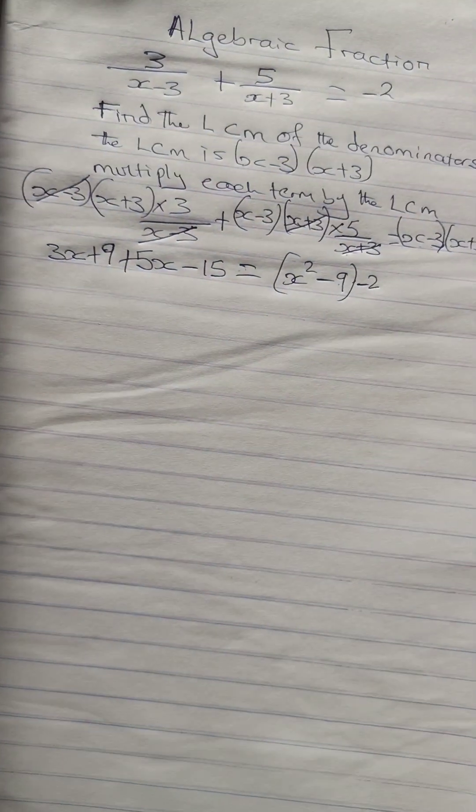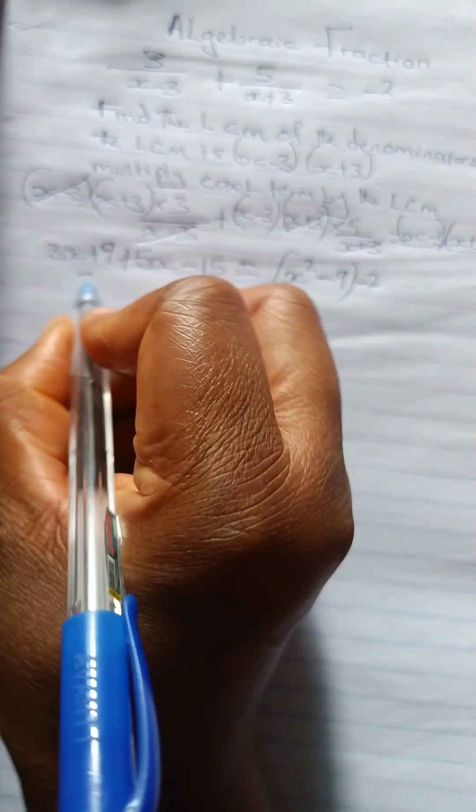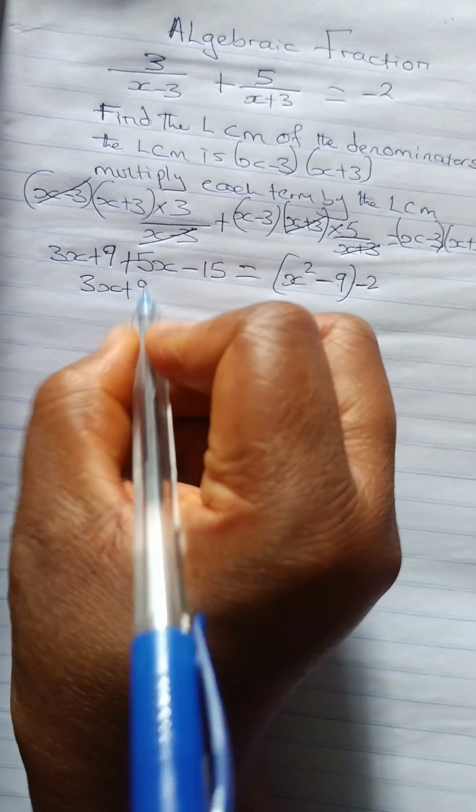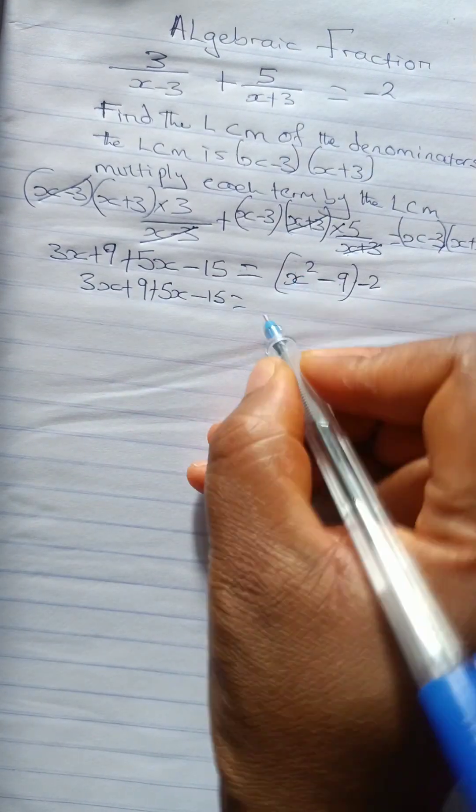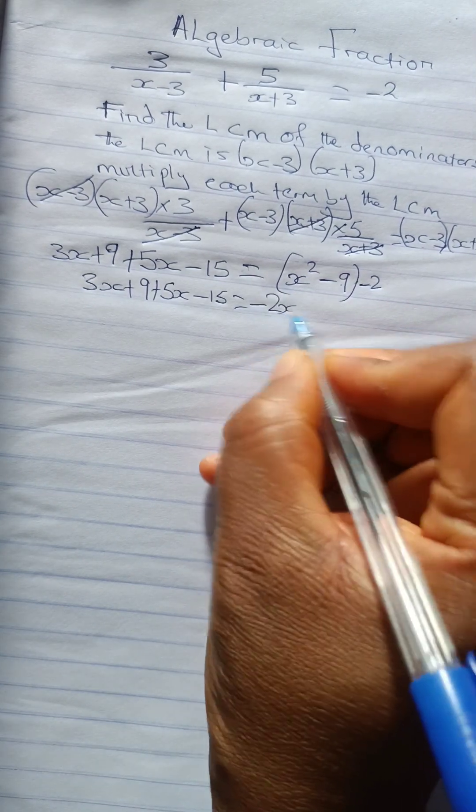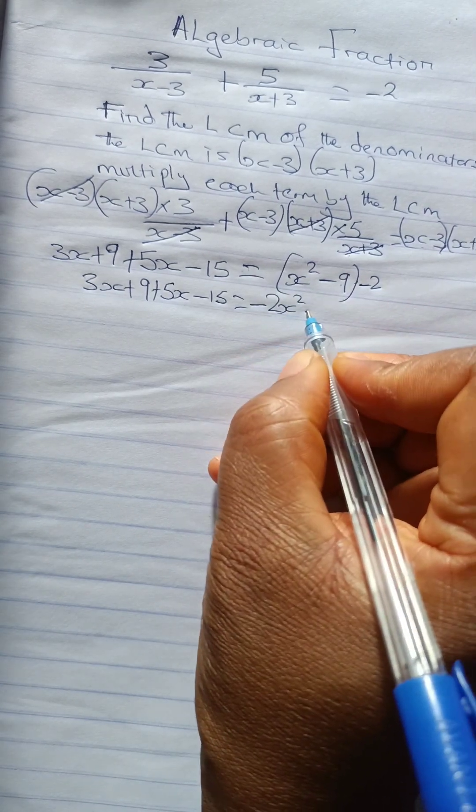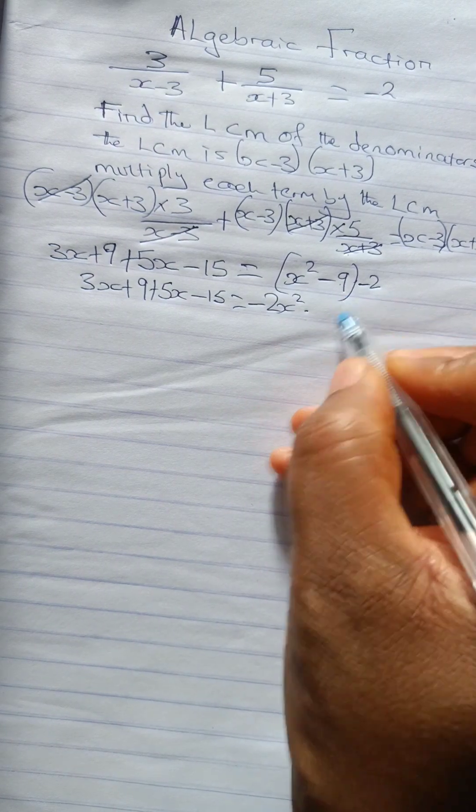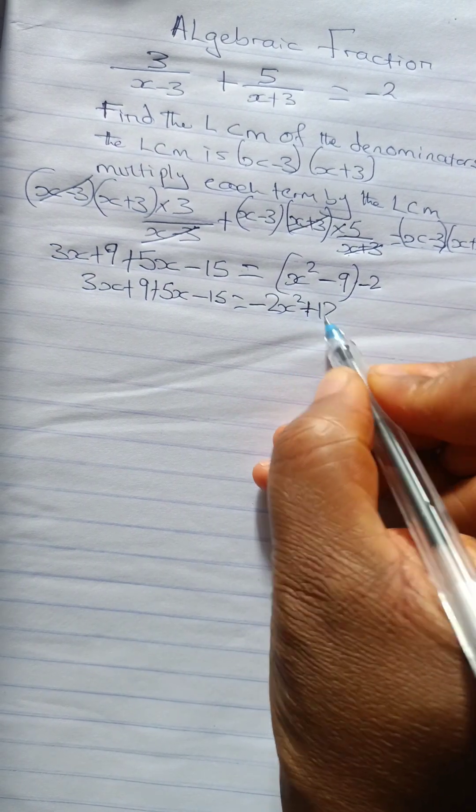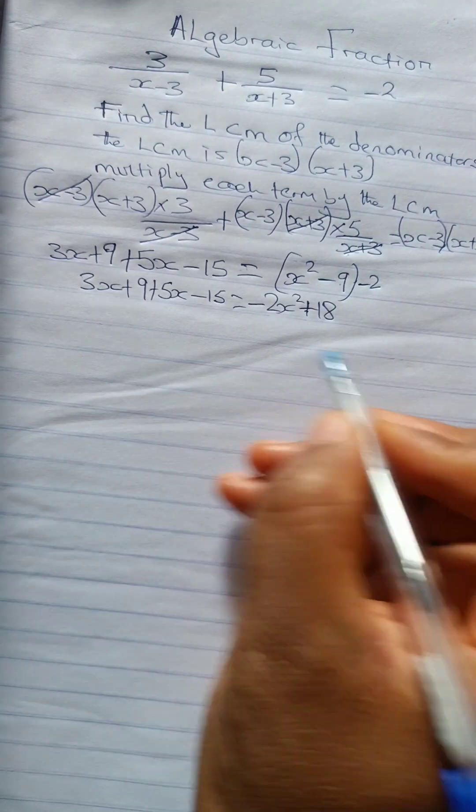so this is it. So now we have 3x plus 9 plus 5x minus 15 equals to minus 2 times this is minus 2x squared. Minus 2x squared minus 2 times minus 9 is plus 18.